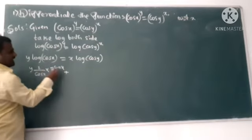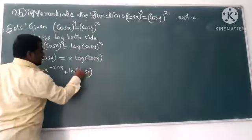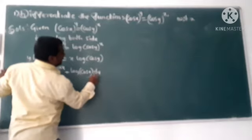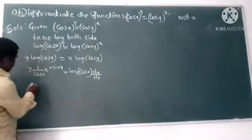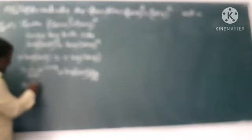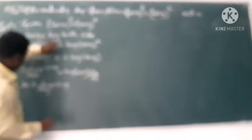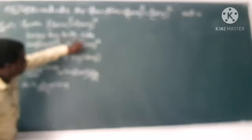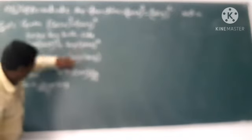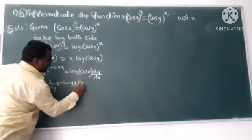So on this side, log(cos x) times dy/dx. On the other term, we have x times differentiation of log(cos y), which is -sin y / cos y times dy/dx.